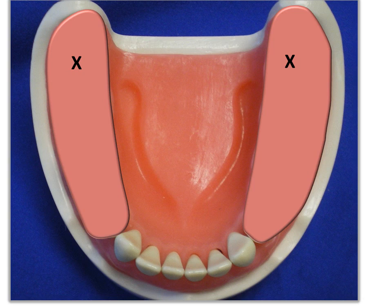We've decided not to replace the third molars. First, we put the cast on the surveyor and survey for guiding planes. The guiding planes will be on the distal of the cuspids and will be short — about one-third the occlusal-gingival height — because we expect anterior-posterior rotation and we don't want something that will bind and torque the tooth.